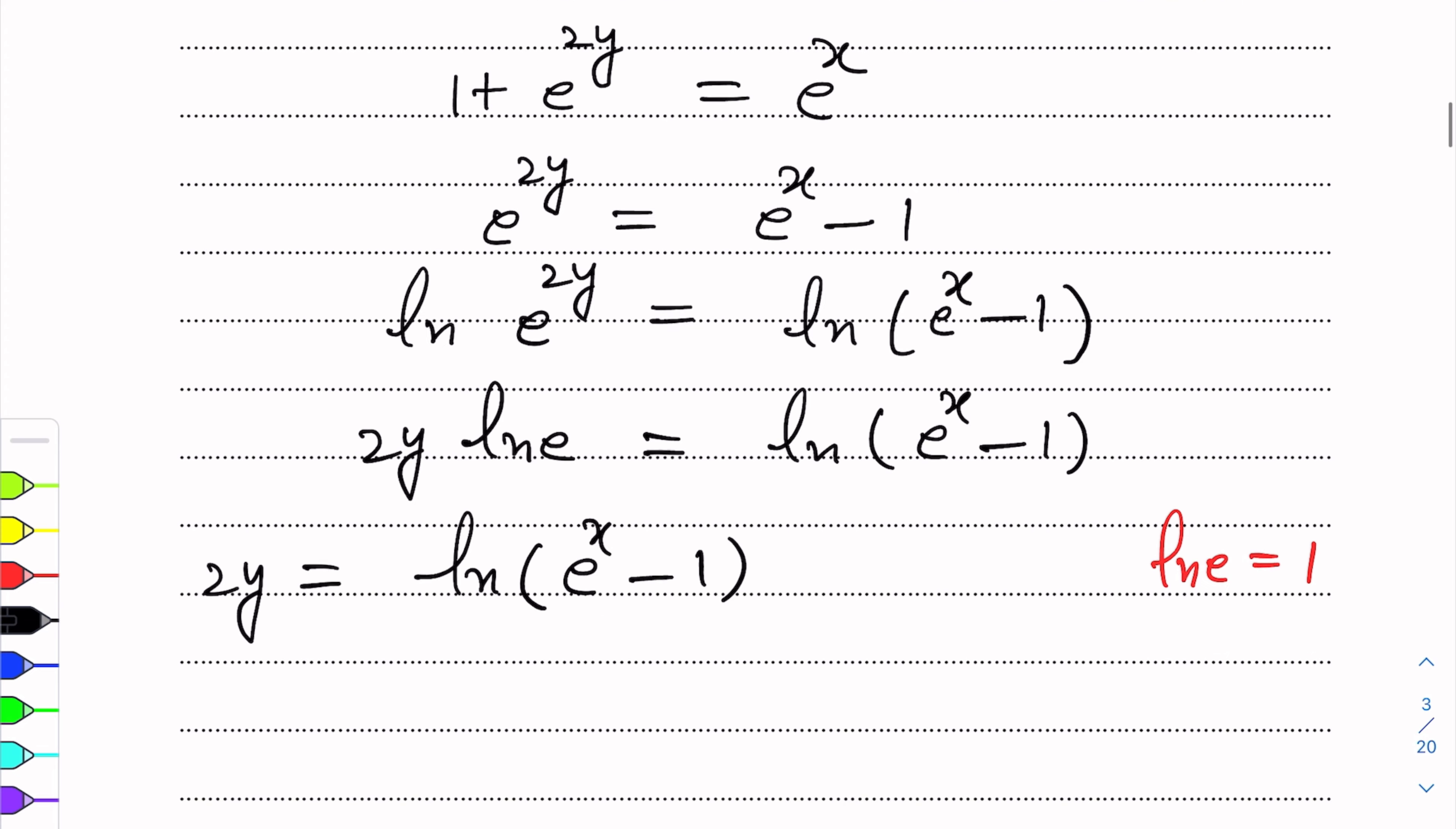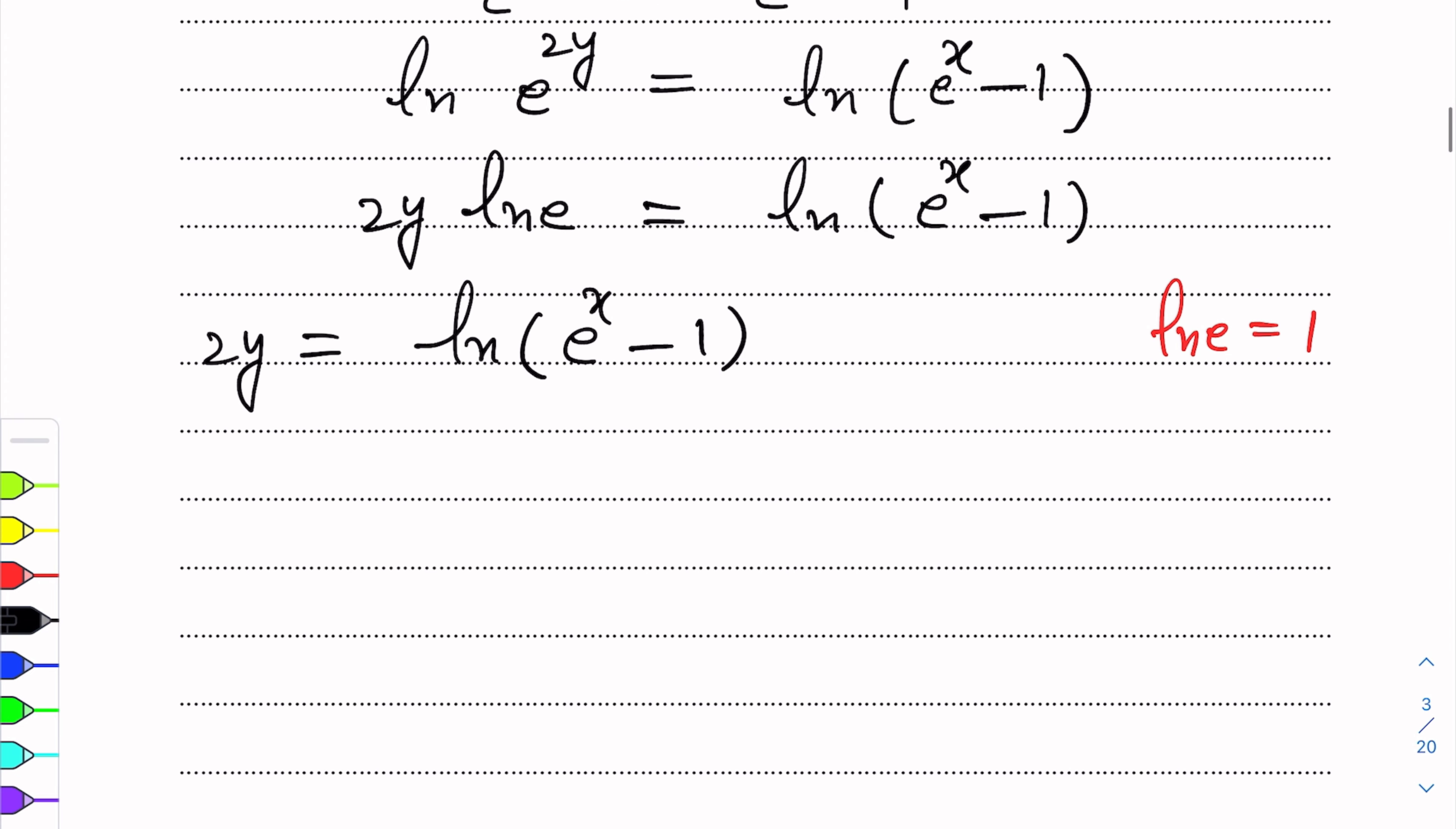From here, y, we have to make the y a subject. y = (1/2)ln(e^x - 1). This is y in terms of x.